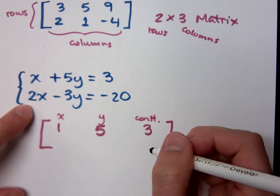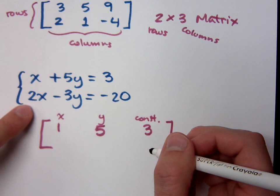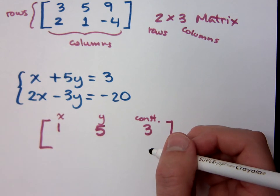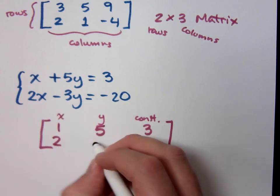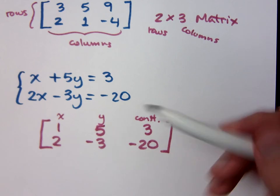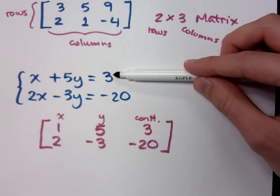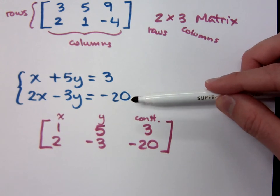My coefficient for this X is 1. I've got a positive 5 for the Y, and my constant is 3. It doesn't matter in terms of the order for the columns. It doesn't matter if I'd given you this equation first or this one first, it would still be the same system. I'd still be looking at where these two lines intersect.